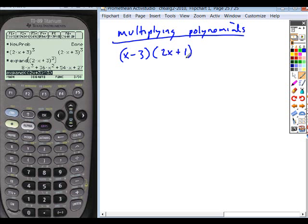If you're multiplying two binomials, what is the process called when you multiply them out? What process would you use, Nick?